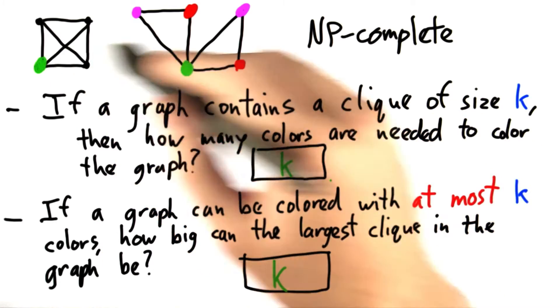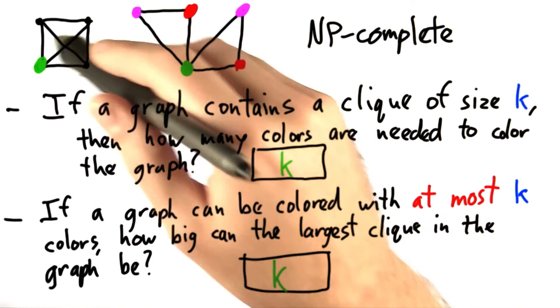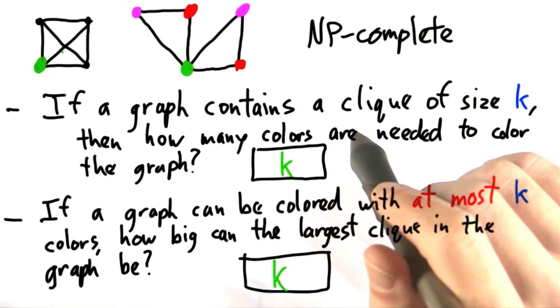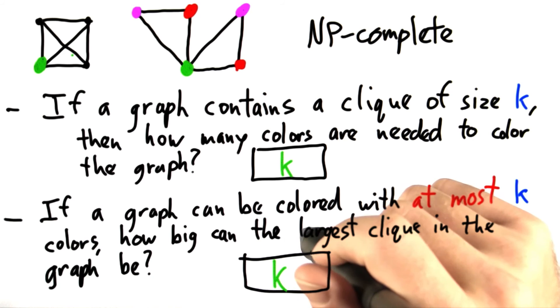Well, then we know, because of the reasoning we just used, that the largest clique can only have k vertices in it. So, because otherwise, we wouldn't be able to use k colors in order to color the graph.